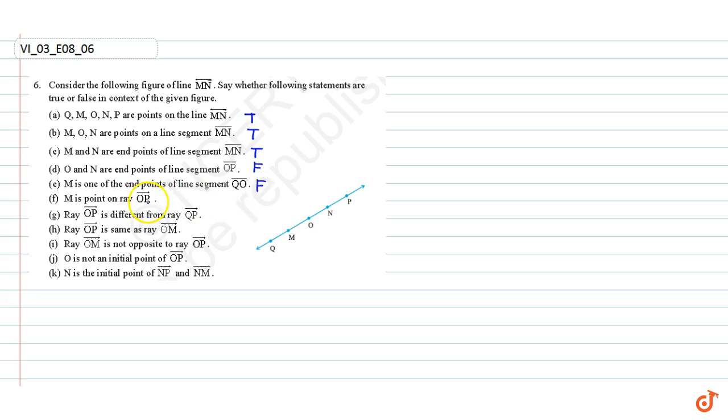M is a point on the ray OP. That is false.